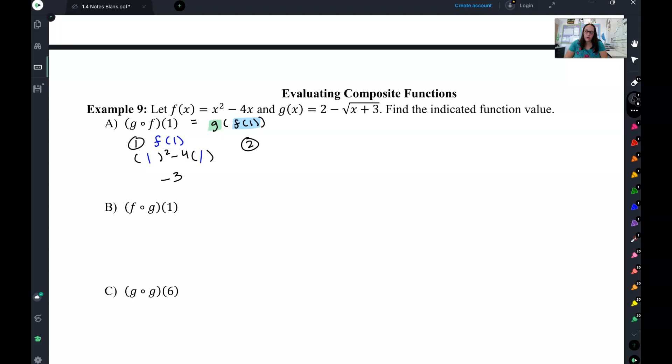Now what I'm going to do is when I do the g part, this is the answer that goes inside the g part. And this is how it works every time. So I want g of negative 3. Now I do my g function with parentheses everywhere there's an x and plug my negative 3 in. So 2 minus negative 3 plus 3 is 0. Square root of 0 is just 0, so final answer is 2.